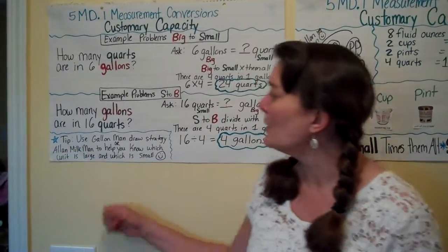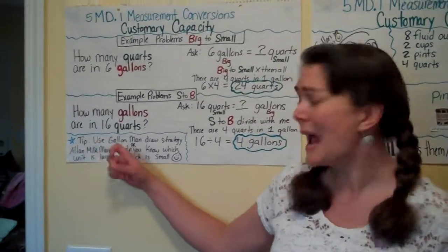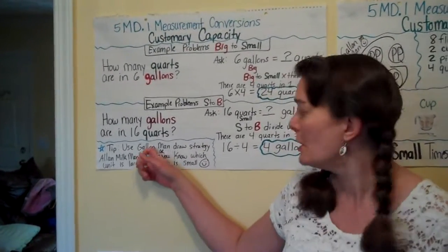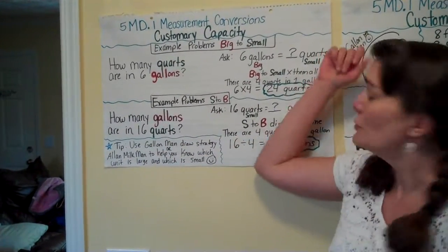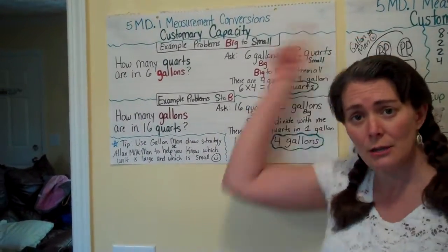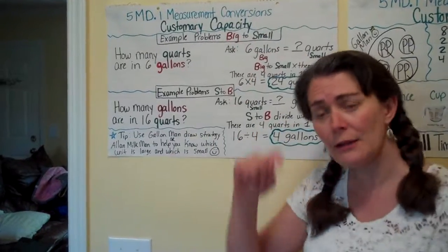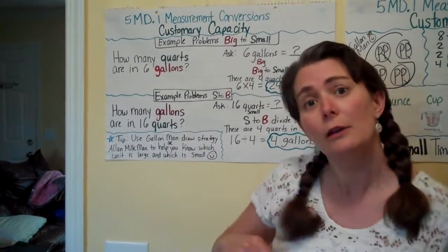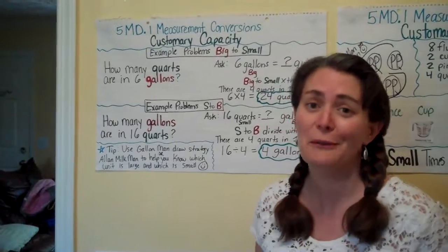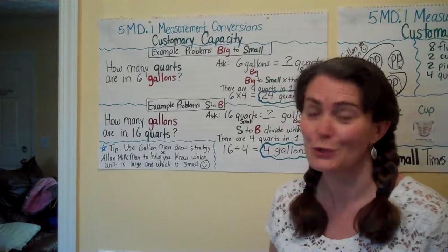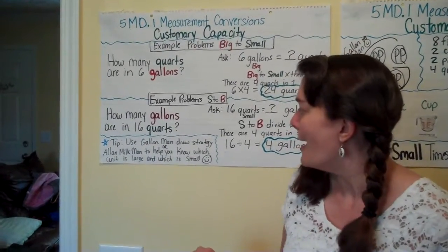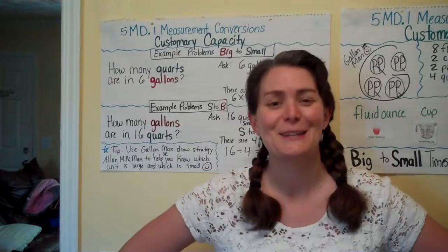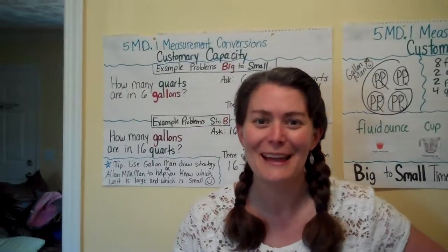A little tip: use Gallon Man. If you don't know which unit is smaller or larger, use the Gallon Man draw strategy in the Land of Gallen, or use the Allen Milkman poem to figure out which is large and which is small. As always, if you have any questions, message me. I'll talk to you soon — see you later, fifth grade!